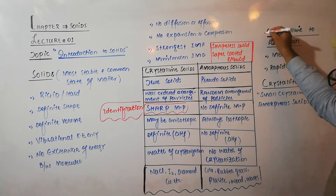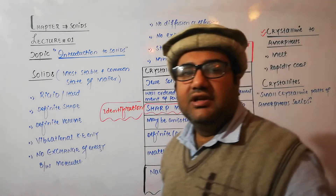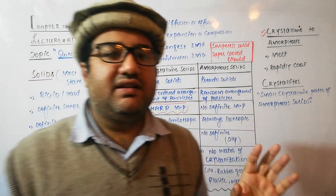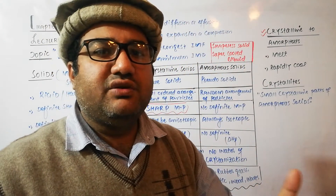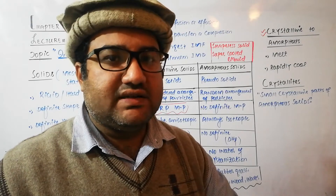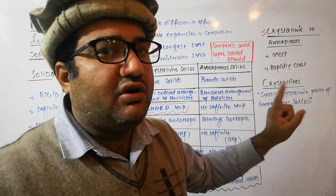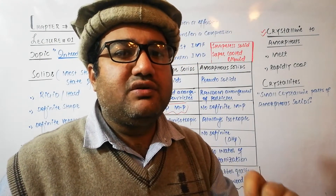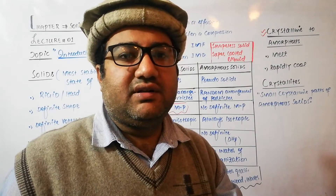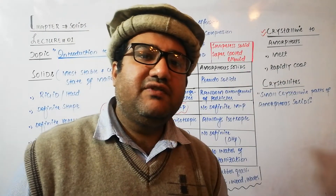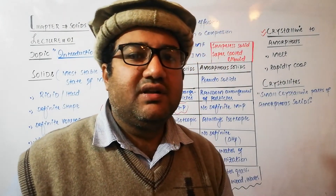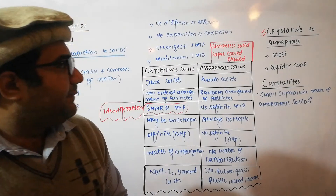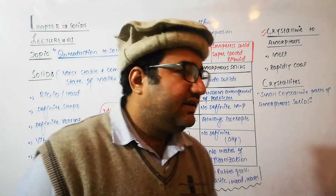How can we convert crystalline solids to amorphous solids? First, melt the crystalline solid — it will change to liquid form and its ordered arrangement will be disturbed. Then rapidly cool it, because rapid cooling will not give time to the molecules to re-adjust themselves into an ordered arrangement. The molecules will remain disordered, and in this way the crystalline solid is changed to an amorphous solid — for example, silica can be easily converted to amorphous silica.